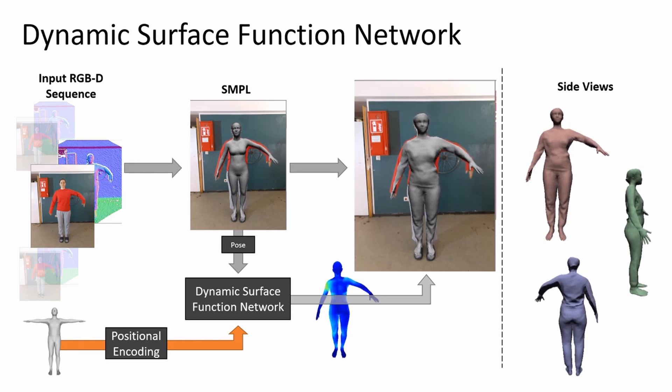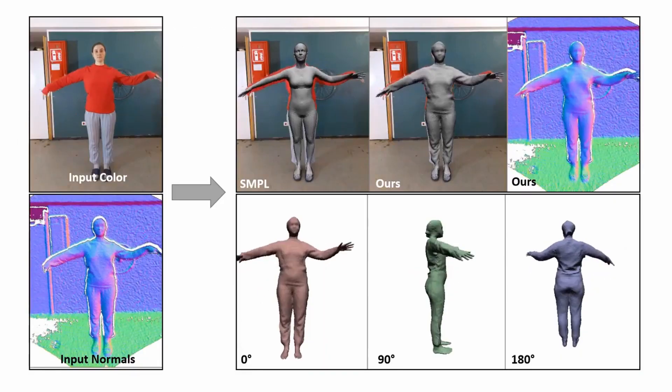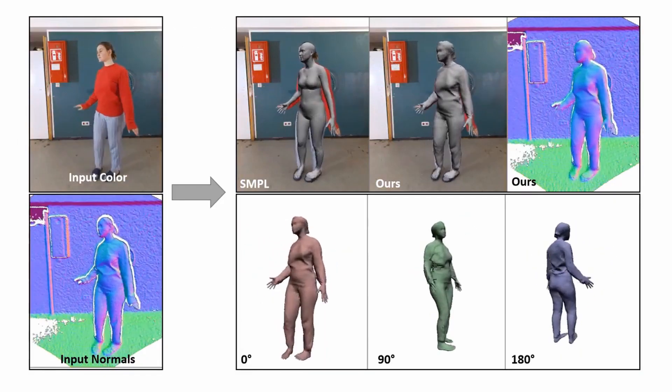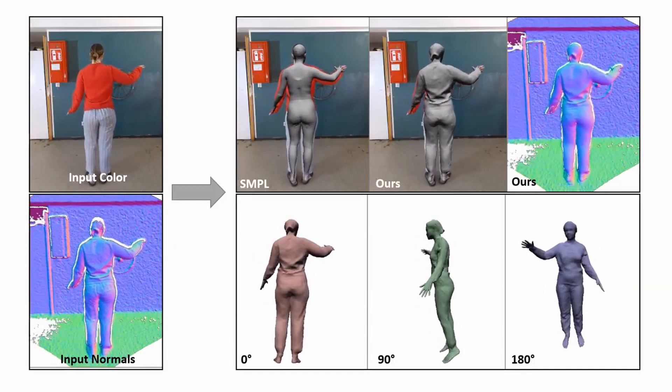Here, we show the evolution of the network output during optimization. Once optimized, we get a reconstruction of the surface for the entire sequence as shown in the following examples.